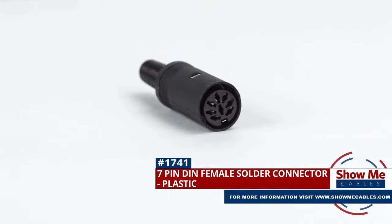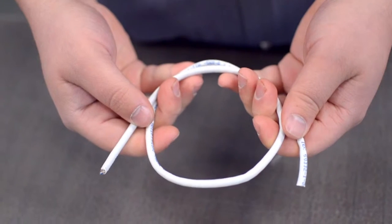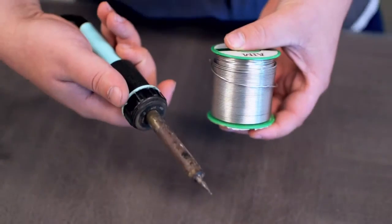To install you will need the following items: low voltage cable, wire strippers, solder and soldering iron, and the DIN connector.